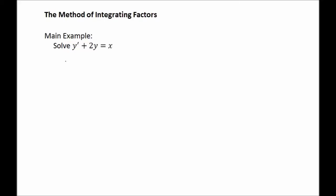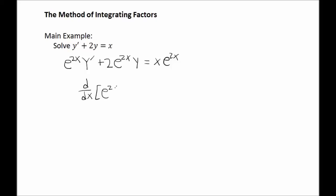But we can modify it so that it is, by multiplying by the expression e to the 2x. Now this is specific to this example — don't worry about where it came from yet; we'll explain that in a moment. But multiplying both sides of the equation by e to the 2x, notice what's happened: the left side of the differential equation is exactly what we would get by taking the derivative of e to the 2x times y and expanding that with the product rule.